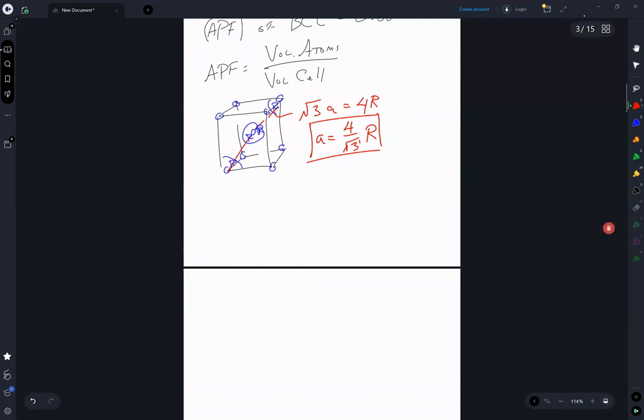And in the BCC, we have eight corner atoms, each shared with its nearest neighbors, and we have one atom in the center shared with no one. So we have two atoms.